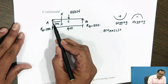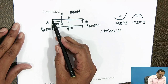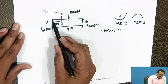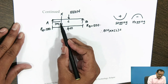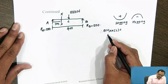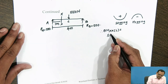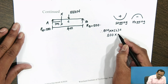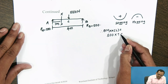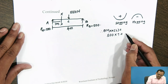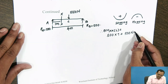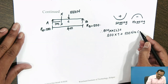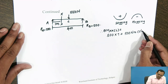To the left side, there is only reaction R_A acting vertically upward and its distance from the section is 1 meter. So, bending moment to the left of section XX is 500 N·m and this moment is in the clockwise direction.